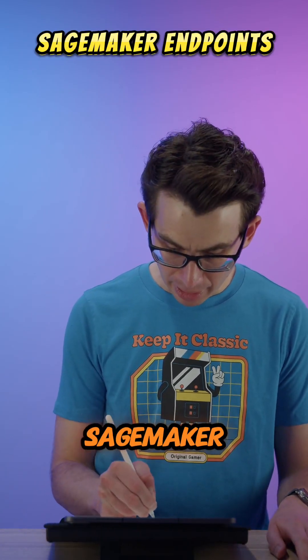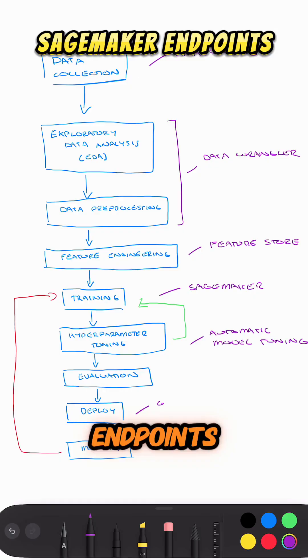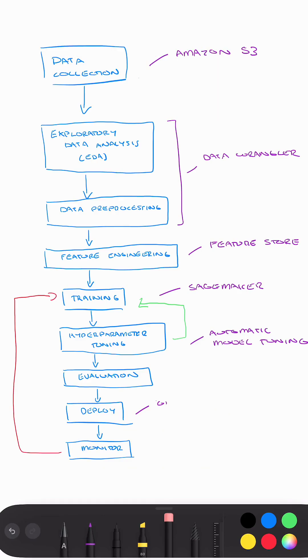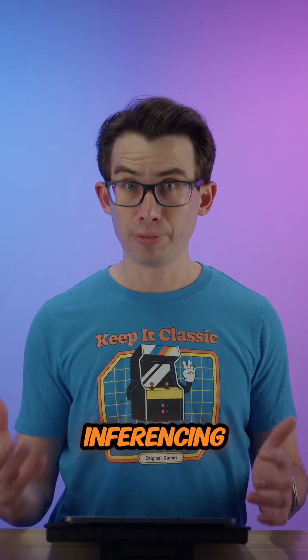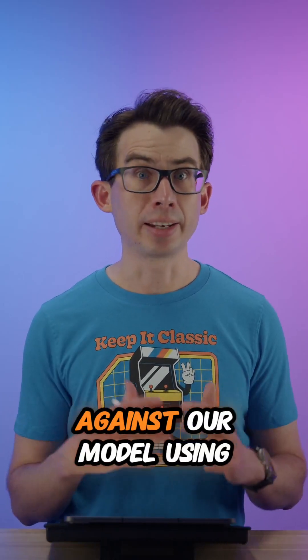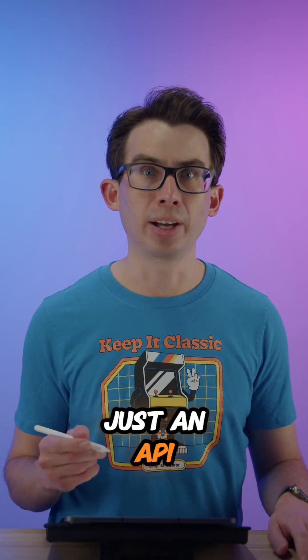Then to deploy the model, we can use Amazon SageMaker endpoints. This allows users to invoke inferencing against our model using just an API call.